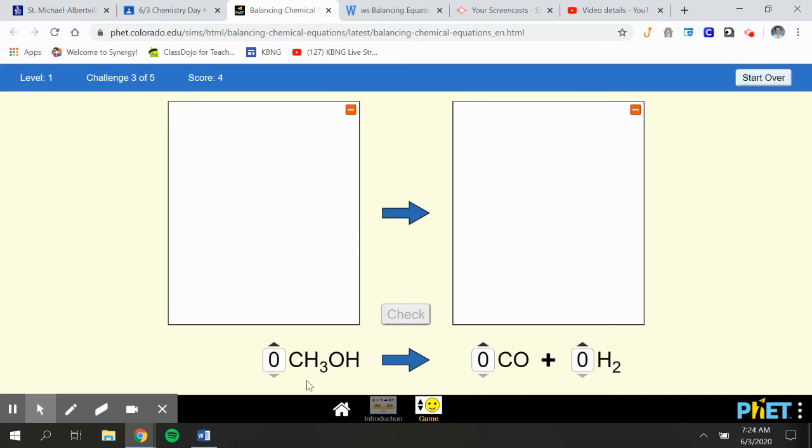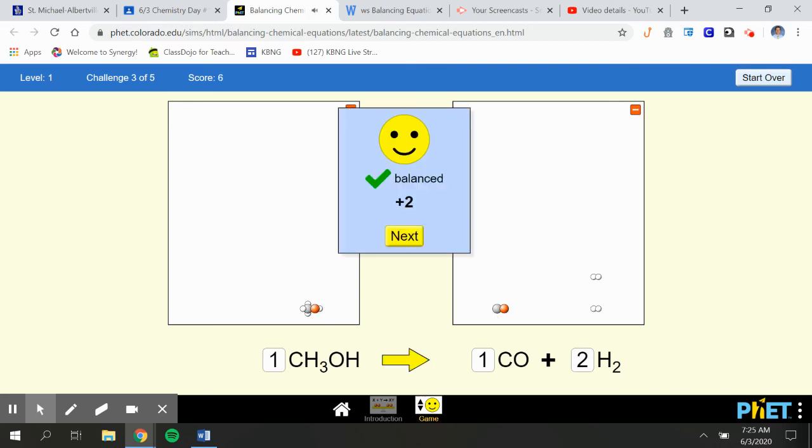We'll do one more together here. CH3OH. Okay, so we have one of those. We have one carbon, so we want one carbon. We have one oxygen as well, that's great. But we have four hydrogens. So we need two H2 molecules. So four hydrogens on each side. One oxygen on each side. One carbon on each side. There we go. So those are all the different things that you can do to make this work.